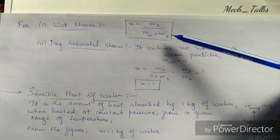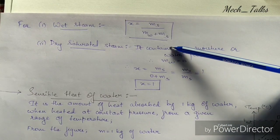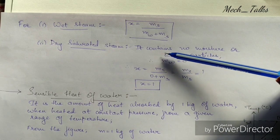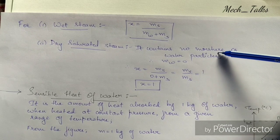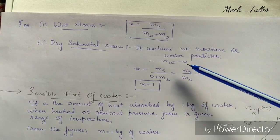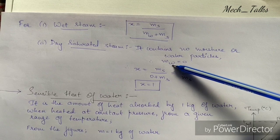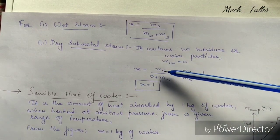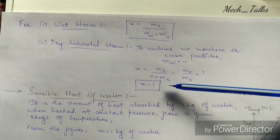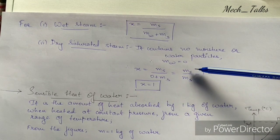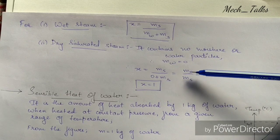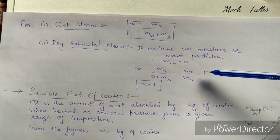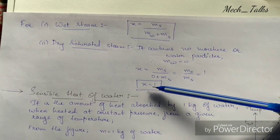For dry saturated steam, as discussed earlier, it does not contain any moisture particles. Therefore mw = 0, so x = ms / (0 + ms) = ms / ms = 1. Therefore the dryness fraction for dry saturated steam is equal to 1.